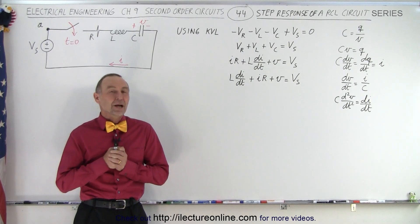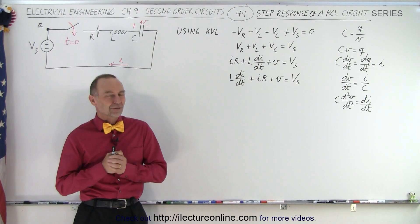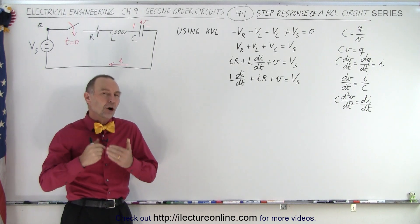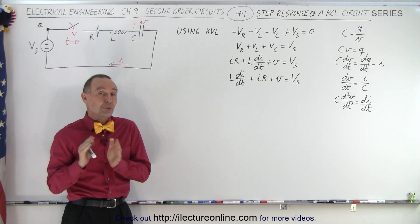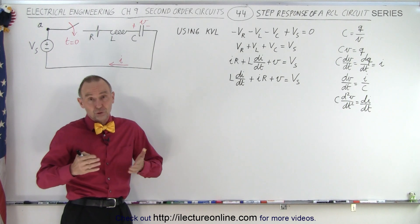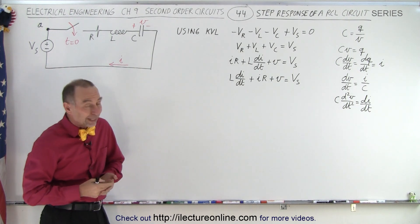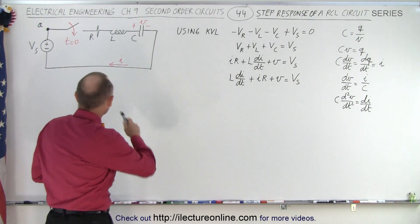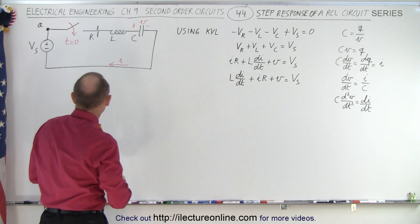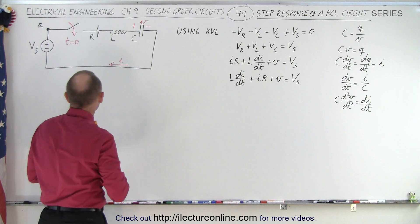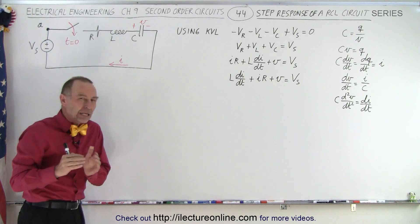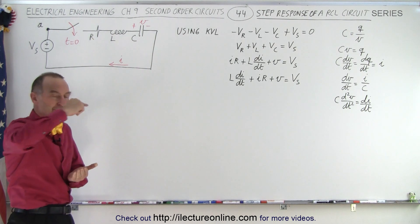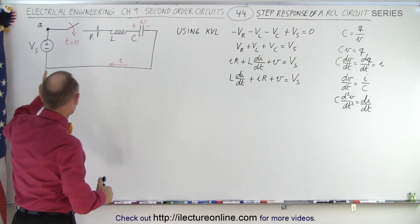Welcome to iLecter Online. We're going to look at the step response of an RCL circuit. We'll have a source — either a voltage source or a current source — and we'll have a resistor, a capacitor, and an inductor. We're going to start with the three components in series connected to a voltage source and a switch. At t equals zero, the switch will close, so we have a step function input of voltage from the source.